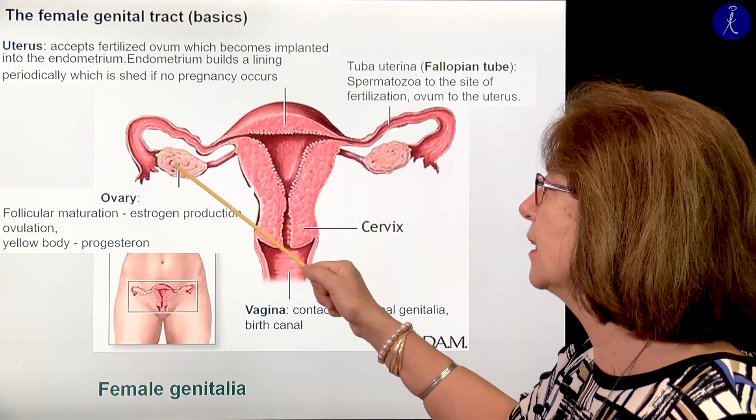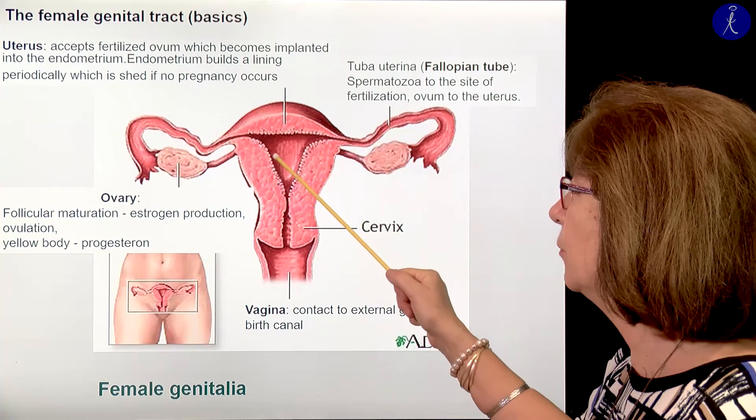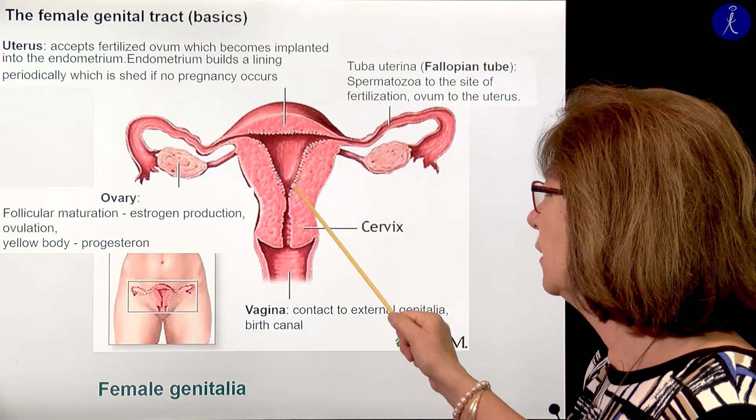The oocyte arrives to the uterus. If it's fertilized, then it will be embedded. If not, then it will die off. And if it dies off, then the uterine mucous membrane sheds through the cervix and through the vagina, and it will leave the body.